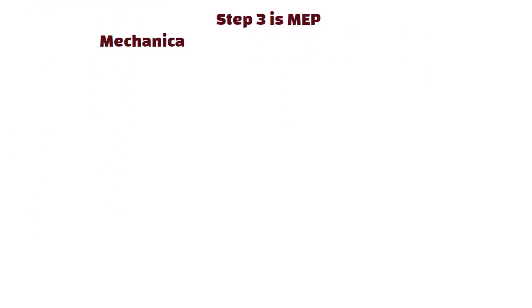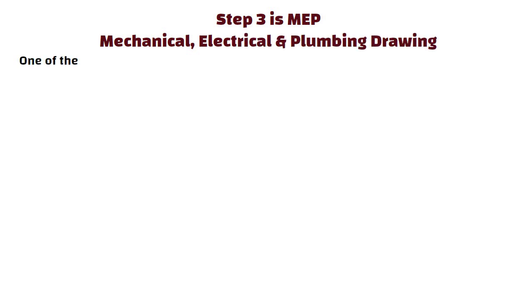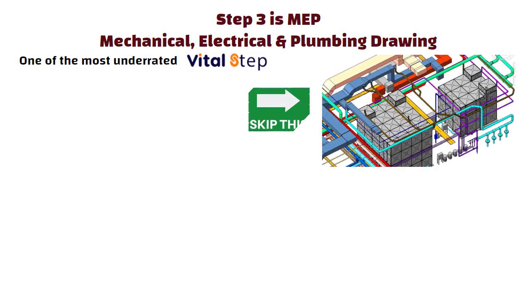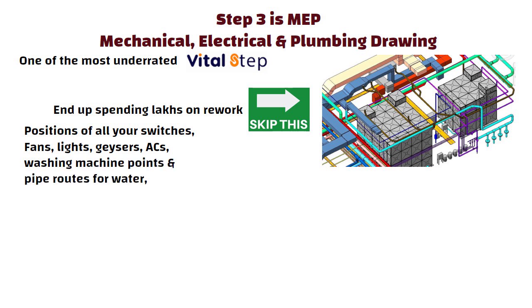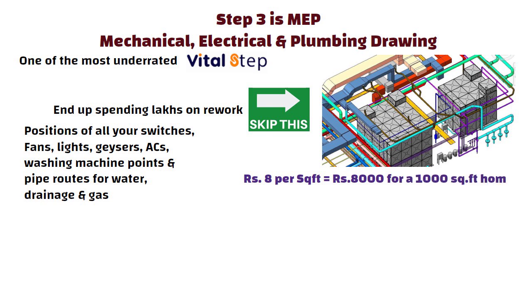Step 3 is MEP — that is Mechanical, Electrical and Plumbing drawing. This is one of the most underrated but vital steps. Most people skip this and later end up spending lakhs on rework. MEP drawings show the positions of all your switches, fans, lights, geysers, ACs, washing machine points and also the pipe routes for water, drainage and gas. This step costs around 8 rupees per square feet, that is 8,000 rupees for a 1,000 square feet home.